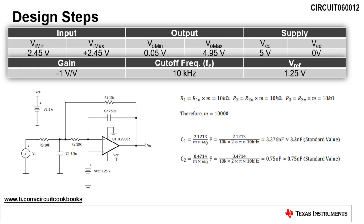The standard values for C1 and C2 turn out to be 3.3 nanofarads and 0.75 nanofarads, respectively.